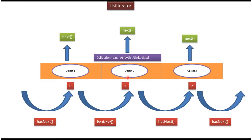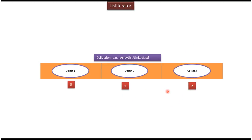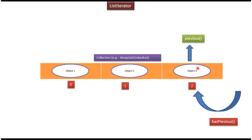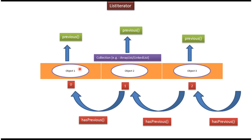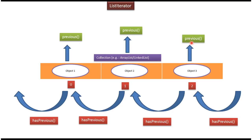List Iterator has a hasPrevious method. This method will return true if an object is there previously, and using the previous method we can get that object. Each time you call hasPrevious, if an object is present it will return true and we get the object using previous. When no object is there, hasPrevious will return false. The hasPrevious and previous methods are used to traverse the cursor in the reverse direction in the list and get each element one by one.